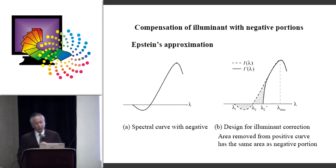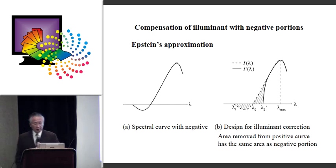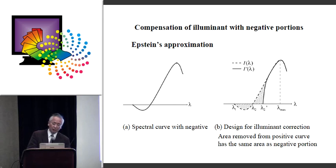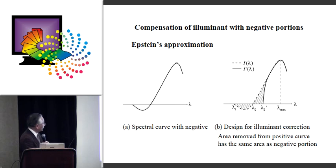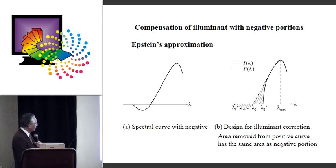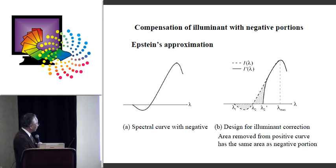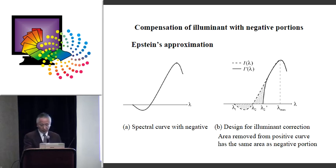In the field of illuminant approximation, several methods were developed. In this study, we checked several approximation methods. This is the original curve with a negative portion. This is designed for illuminant correction — the negative curve is compensated by removing the same amount from the positive area, so that the area removed from the positive curve equals the negative portion. This is the basic idea.